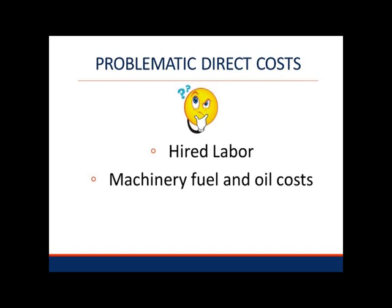Mary and Robert found that many of an enterprise's direct costs were fairly easy to identify. They knew or had records for most of the specific crop expenses, such as seeds planted, fertilizers spread, and chemicals applied.